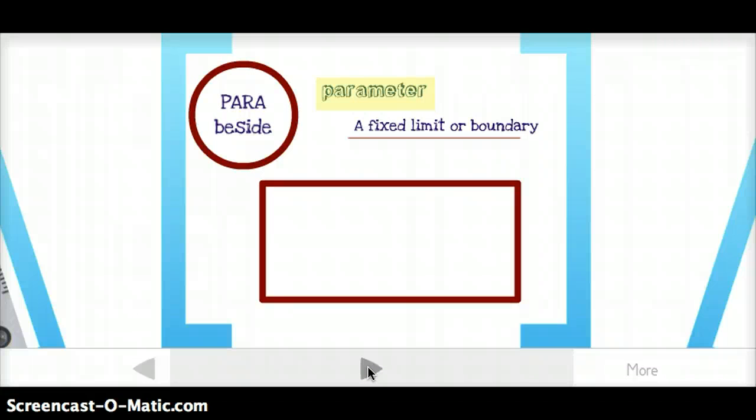Parameter is, again, two roots. We've got a lot of roots here, so I hope you're highlighting as we go. Para means beside, and it has to do with the fixed limit or boundary. And when we say parameter, it could be a physical parameter. So, the four walls of my room make up the parameter, the limits or boundaries of my classroom. But it could also mean a different kind of parameter, a different kind of boundary, like rules are parameters. We talk about the parameters of a budget, so how much money you can or can't spend.